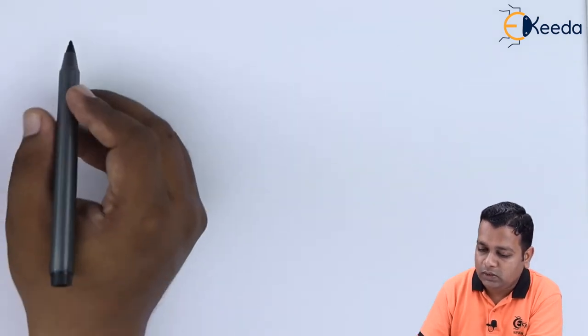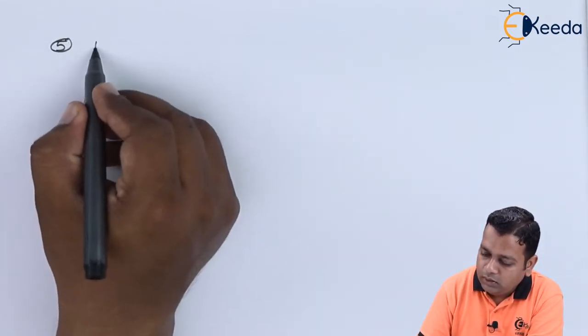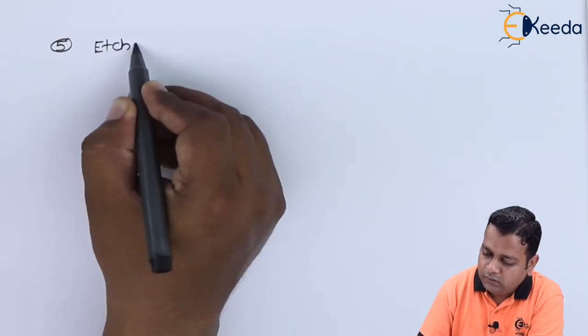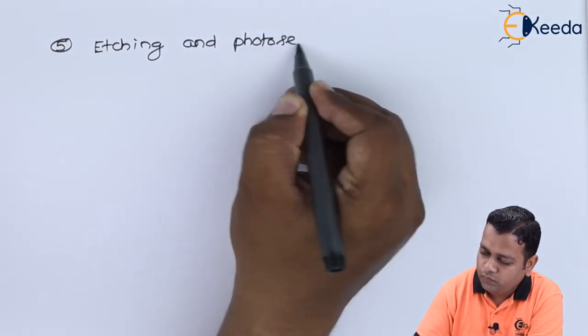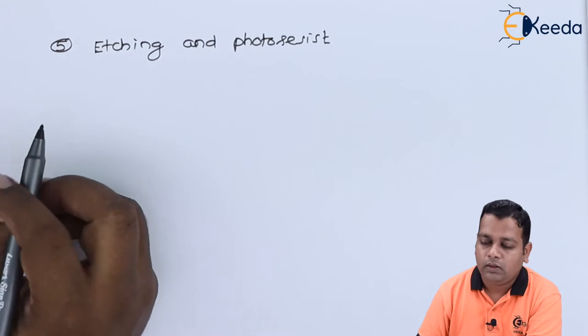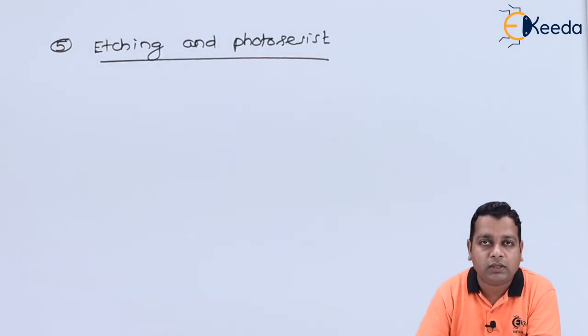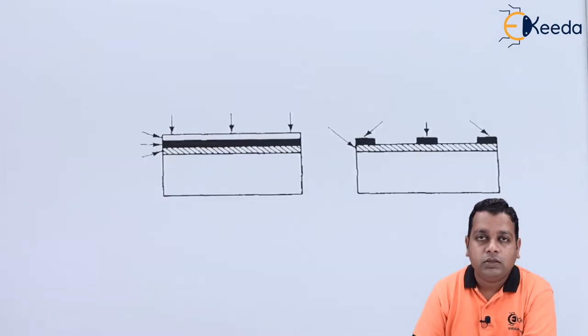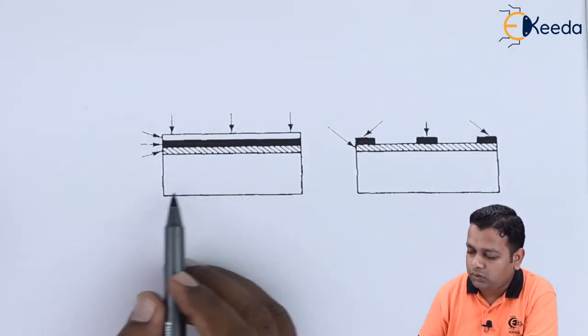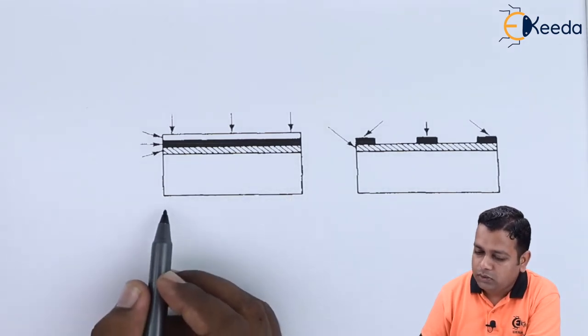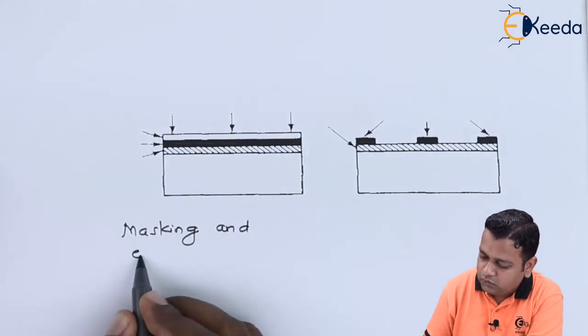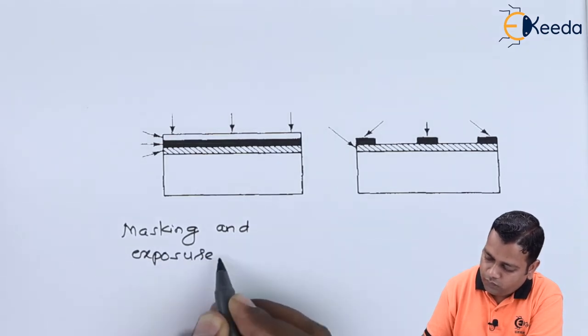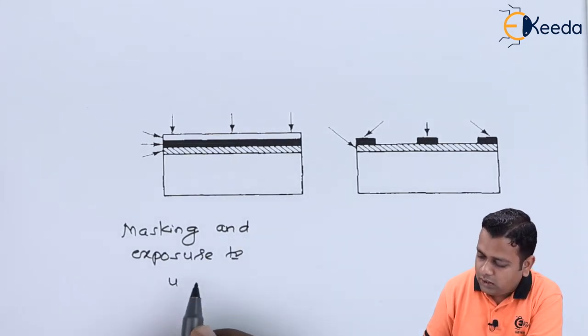The fifth technique used for the fabrication of MMICs is given as etching and photoresist. So for etching and photoresist, one example can be shown with the help of a schematic diagram. So in this example we have two sections here, where for the first section the masking and exposure to ultraviolet radiation.